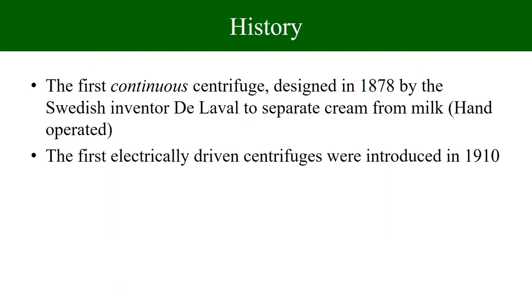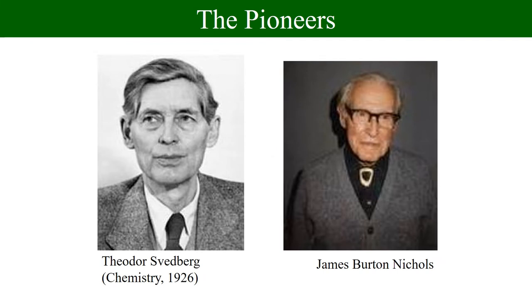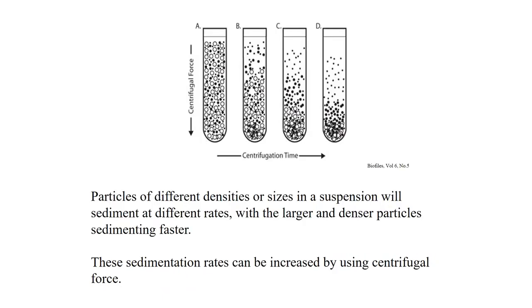Let us look at the history of centrifuge development. The first continuous centrifuge was designed in 1878 by a Swedish scientist, basically for separating cream from milk. It was hand-operated. The first electrically driven centrifuges were made in 1920. Svedberg and Nichols designed the first ultracentrifuge in 1923, and that first ultracentrifuge had a capacity of only 10,000 revolutions per minute. Let us now get into the principle of this technique.